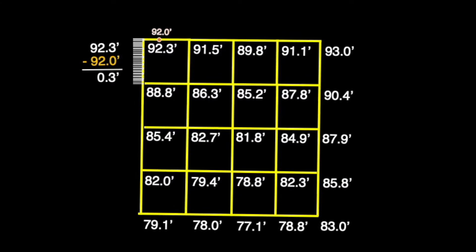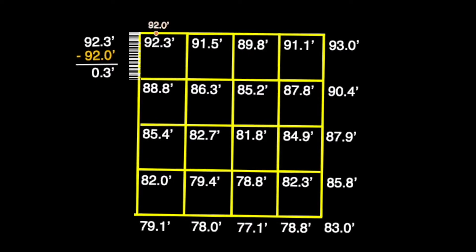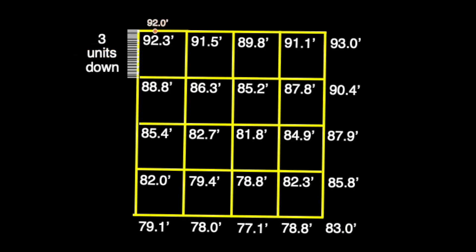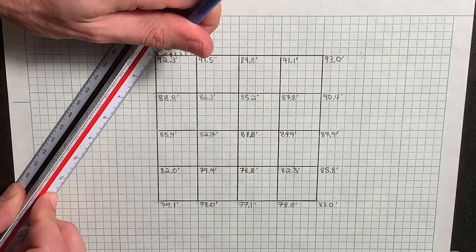With 0.3 feet remaining, we'll once again move the decimal place over one space to the right and reveal the amount of units we'll need to count in order to reach our desired point of 92 feet.